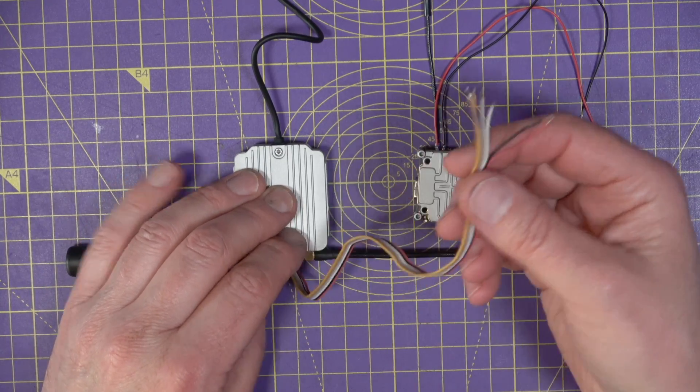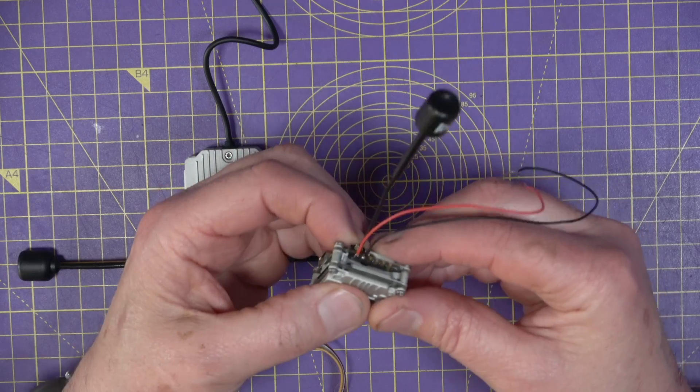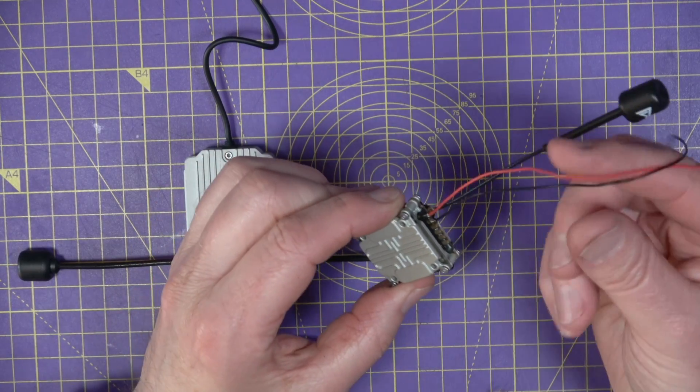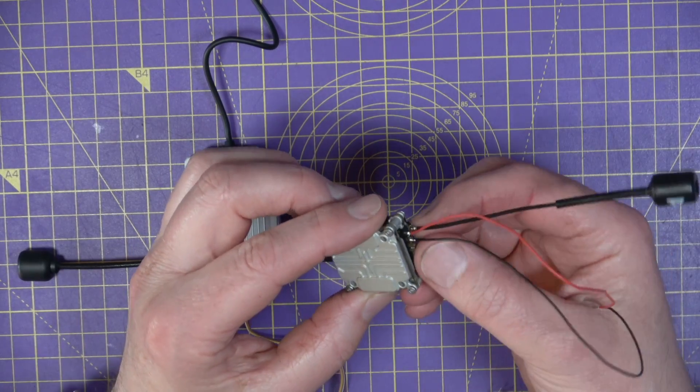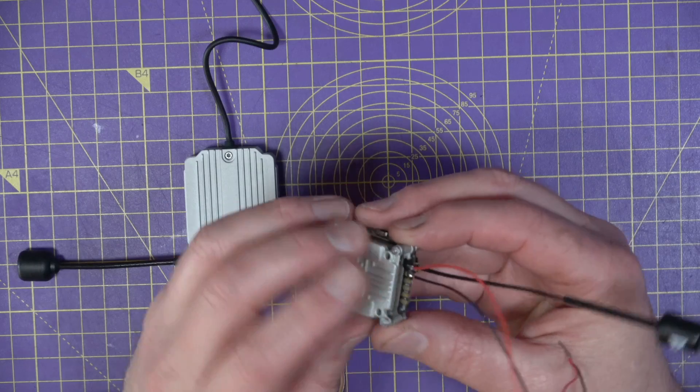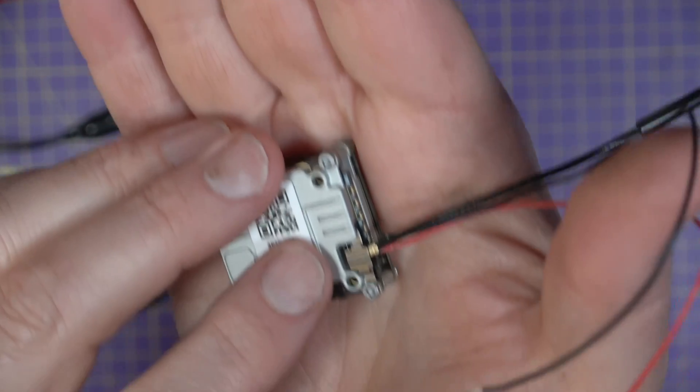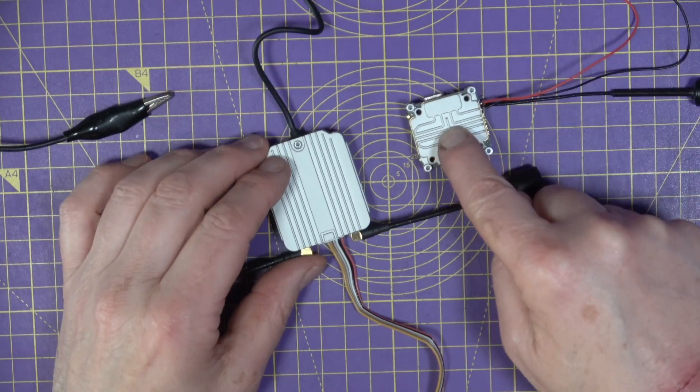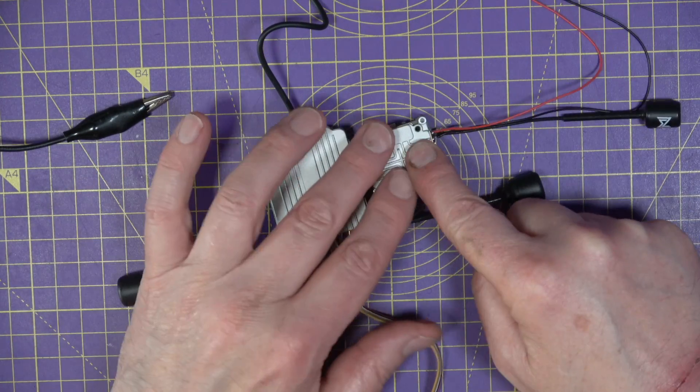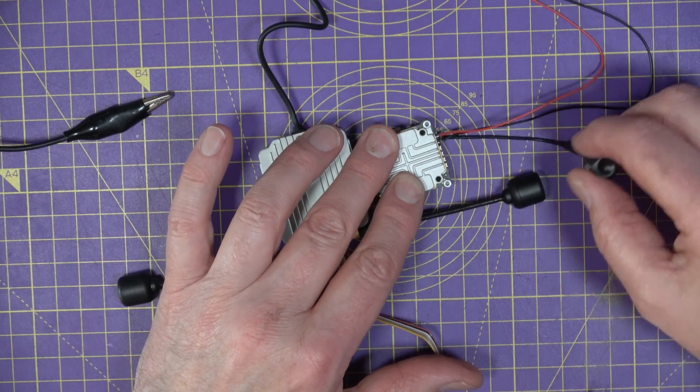If you've got a Caddx Vista, what you need to do is solder a couple of wires onto positive and ground, red and black. I've also connected the antenna. These have got dynamic power management on the output so you shouldn't really need to connect an antenna, but I'm just being cautious.